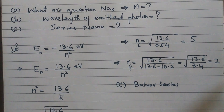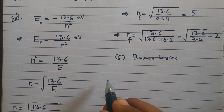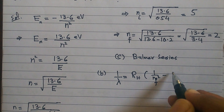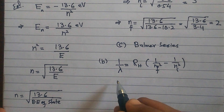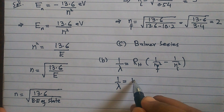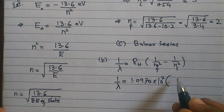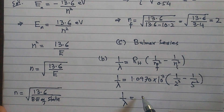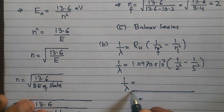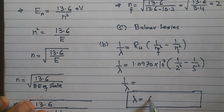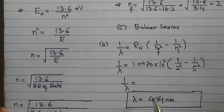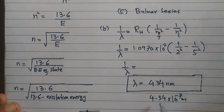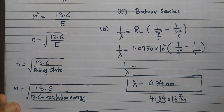For part B, we need to find the wavelength. Using the Rydberg formula: 1/λ = R_H × (1/n_f² − 1/n_i²). The value of R_H is 1.0970 × 10⁷ m⁻¹. With n_f = 2 and n_i = 5, solving gives λ ≈ 434 nanometers. On a scientific calculator this appears as 4.34 × 10⁻⁷ m, which converting to nanometers gives 434 nm. This is how the numerical is solved.